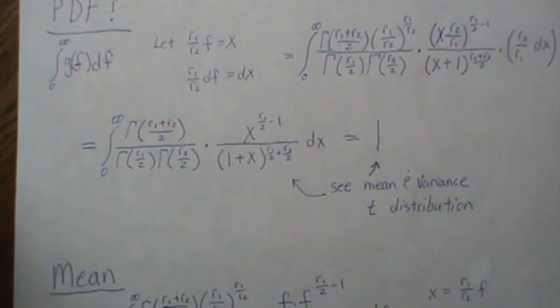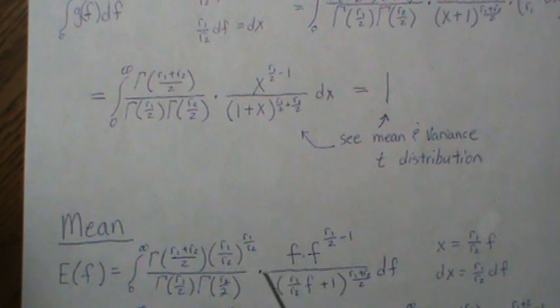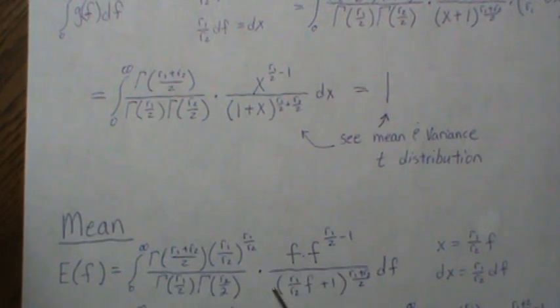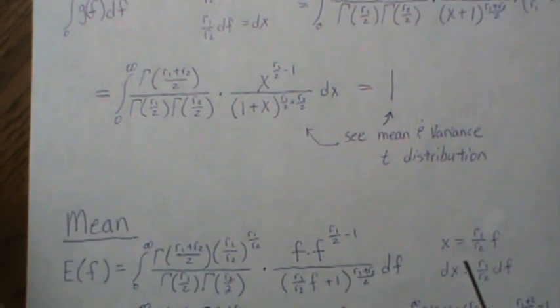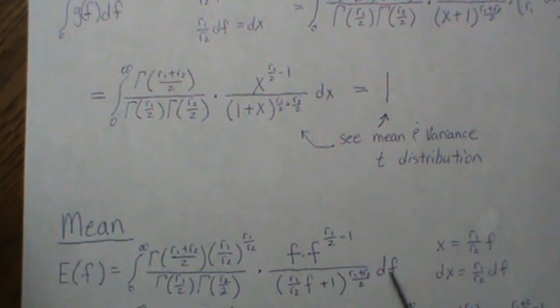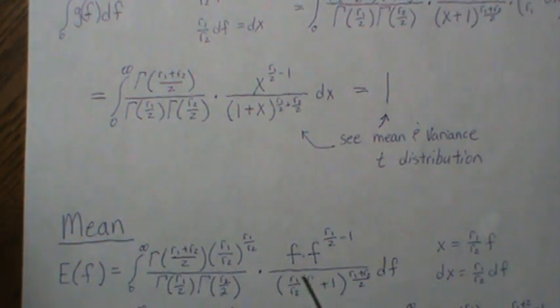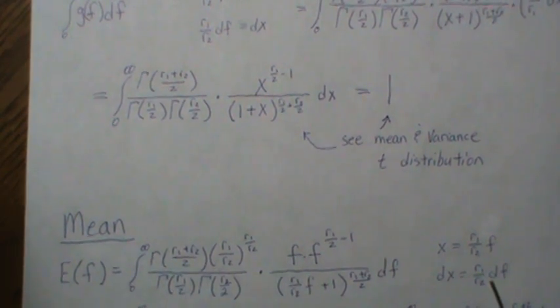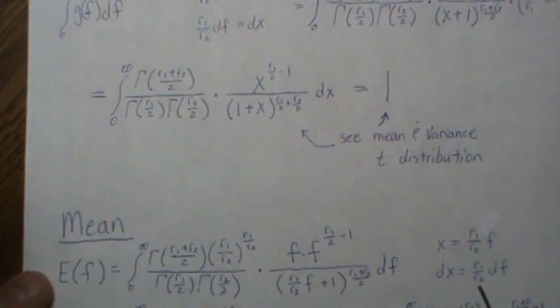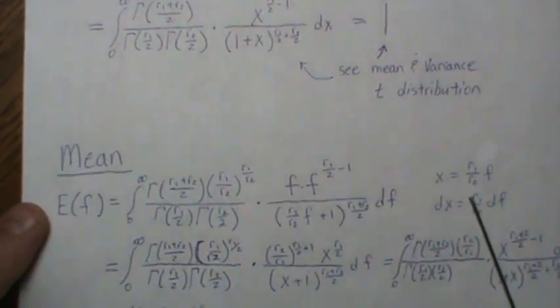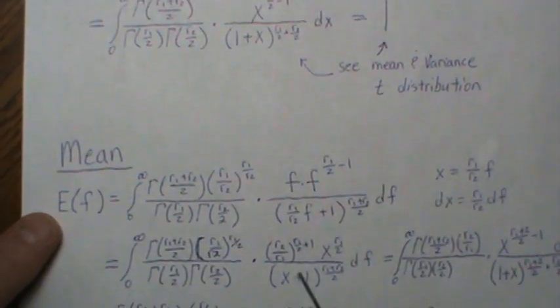Now let's find the mean of this distribution. So what we do is we stick an f in with the pdf, and then we integrate it from 0 to infinity. So we make the same variable change where this is x, and then we dx and df, and we plug that information into our density, and we get this.